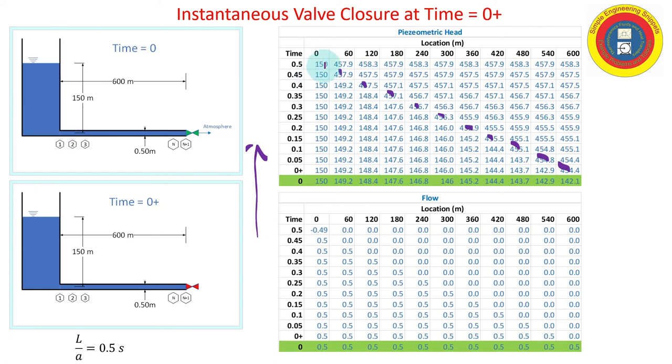But I stopped the analysis at 0.5 seconds. Flow is a very similar situation. In the green we have steady state 0.5 cubic meters per second, I slammed the valve shut, and you'll see the flow is brought to zero.